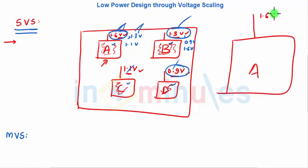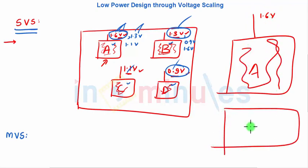Let's zoom into A. This is my A. In static voltage scaling it only had a fixed voltage 1.6 and all the blocks were operating at 1.6. In multiple voltage scaling, A would have 1.6 and say 1.3 volts.